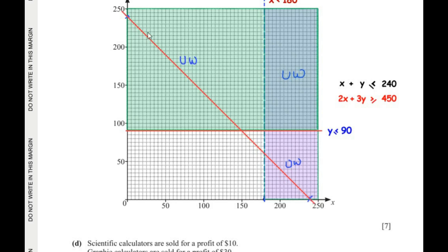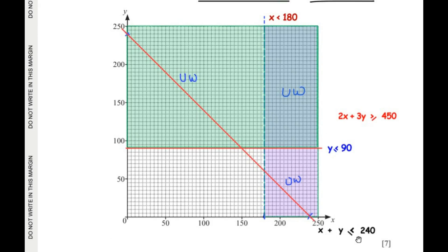For x + y ≤ 240, the region below the line is the wanted region; the region above is unwanted. We shade the region above the line. Combined with the previously shaded regions, only a small unshaded area remains near the origin corner.